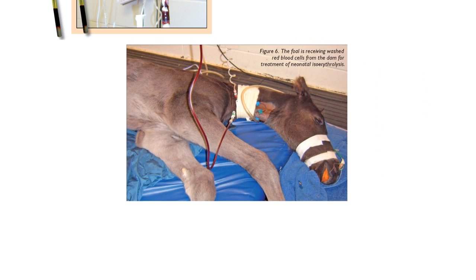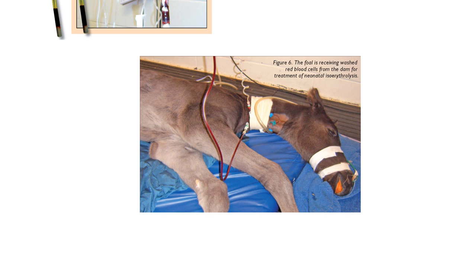Here's a foal getting washed red blood cells from its mom — that's the treatment of neonatal isoerythrolysis. I'm not familiar with all the details of the washing procedure, but they probably wash almost everything away except the red blood cells and then reconstitute in saline. Getting red blood cells back into the foal is the key. And look at those yellow mucous membranes.